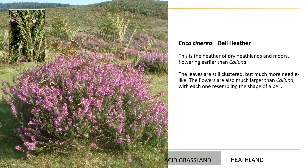The next heather is bell heather, Erica cinerea — confusingly named as 'cinerea' means grey, yet it isn't particularly grey. Look at the leaves: they're very needley, which gives a clue to its habitat — this is very much an indicator of dry acid grassland and dry heathland. The flowers are much bigger than heather, and they do look like bells — that's where the name comes from. The key identification feature is those needley leaves.